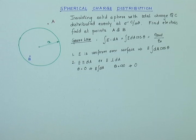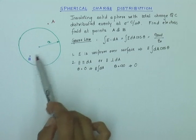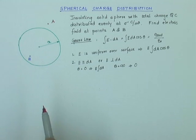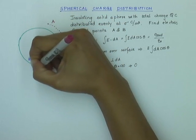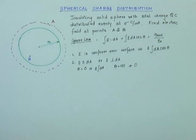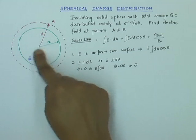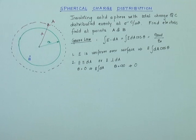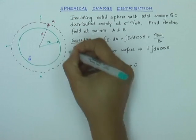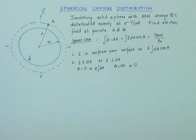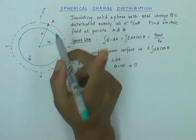The answer to choosing a good Gaussian surface usually lies in exploiting the symmetry of the charge distribution. Here the charge distribution is spherically symmetric. If I choose a spherical Gaussian surface passing through point A with radius r, the charge distribution inside is spherically uniform. So at each point on the Gaussian surface E is radial, and since the sphere has uniformly distributed charge, E is constant at each point at distance r from the center.